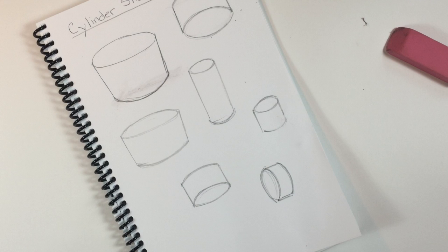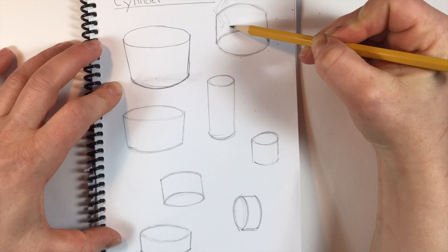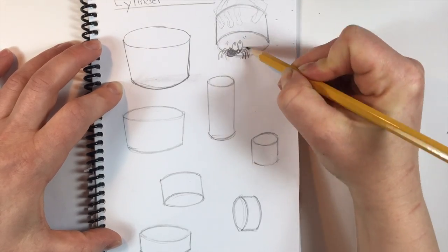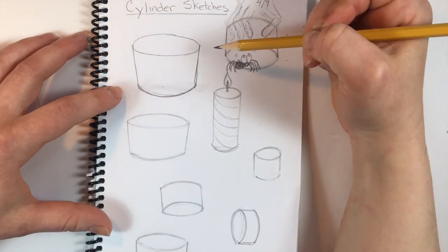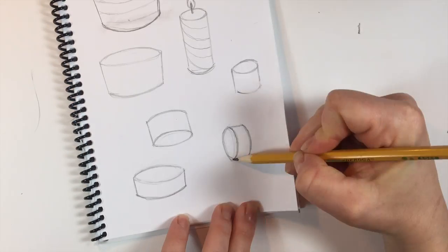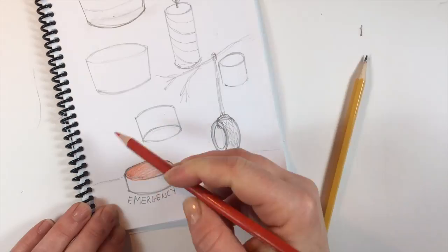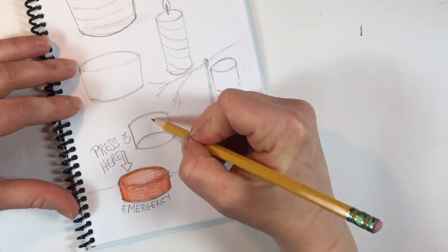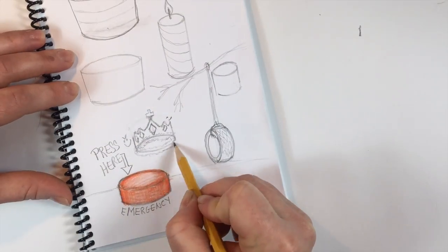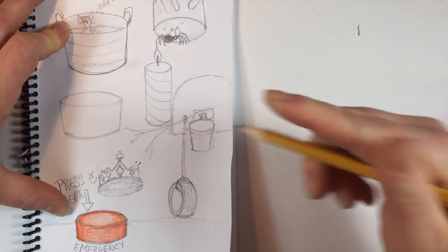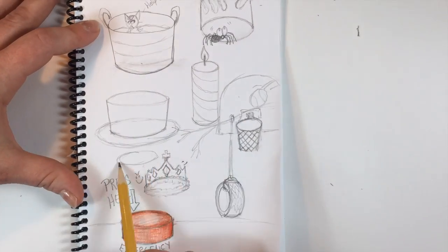But Ms. Adams, why are we drawing cylinders? What is the point of this? Well kids, I'm so glad you asked. Cylinders are great because if you can draw a cylinder, you can draw a lot of things that look 3D. A lot of things start with a cylinder and when you add details, then you can turn them into whatever you'd like.